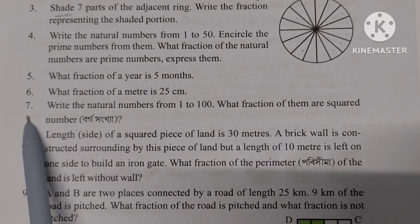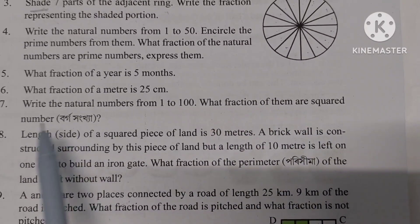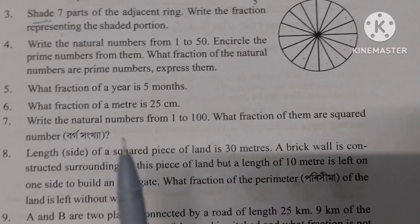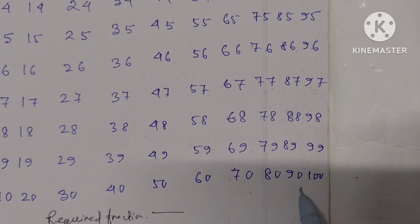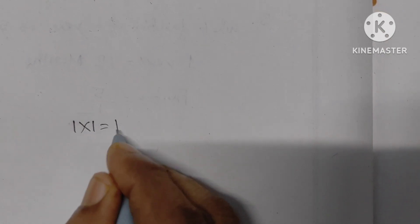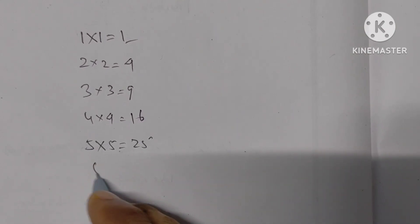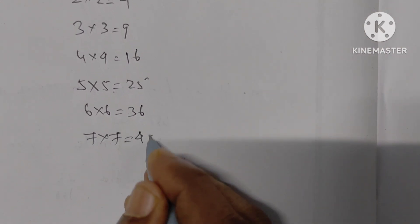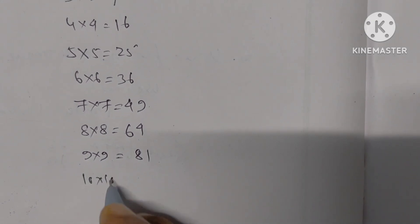Number 7: Write the natural numbers from 1 to 100. What fraction of them are perfect square numbers? The perfect squares are: 1 squared is 1, 2 squared is 4, 3 squared is 9, 4 squared is 16, 5 squared is 25, 6 squared is 36, 7 squared is 49, 8 squared is 64, 9 squared is 81, 10 squared is 100.